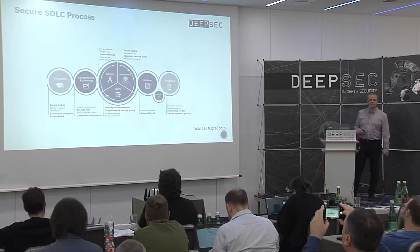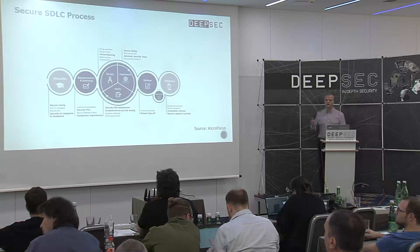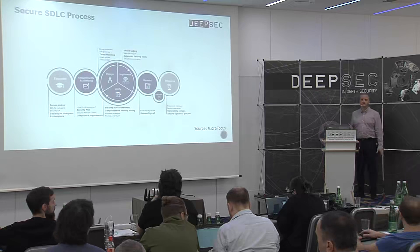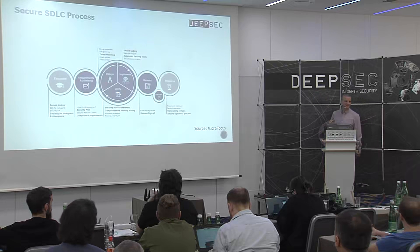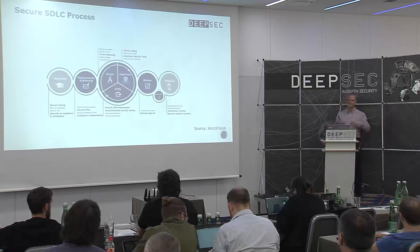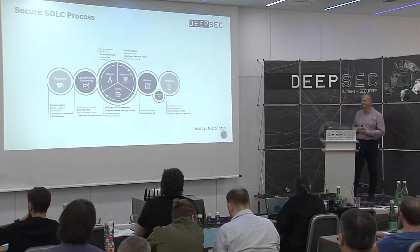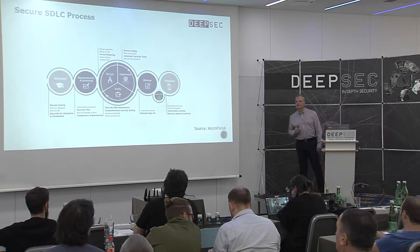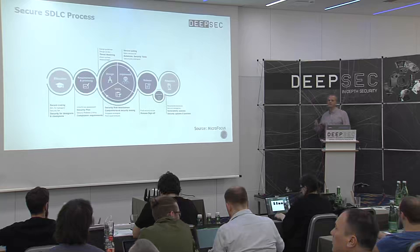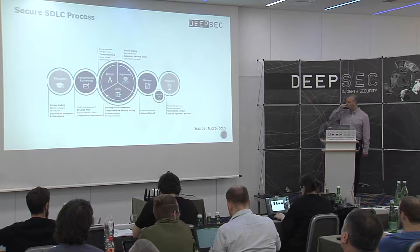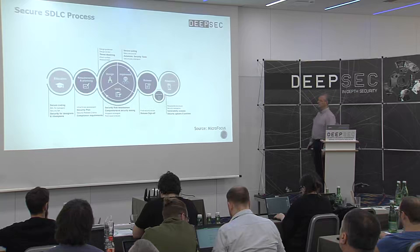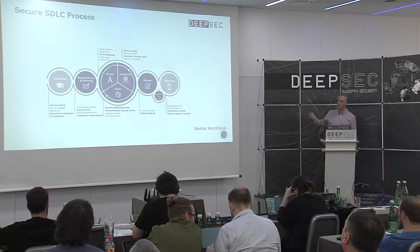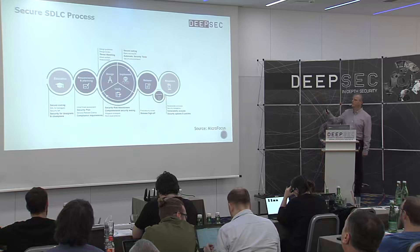A lot of methodologies exist in the market for this model — like Waterfall, Agile, RAD, and many others. In order to reduce security risk, we also need to implement security activities as part of this process. You can see here examples of such processes: security planning, threat modeling, secure design review, security automation testing, release sign-off, and many others. And today we're going to talk about threat modeling.